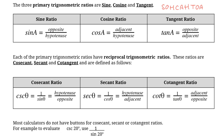There are three other trig ratios — the reciprocal trigonometric ratios. These are cosecant, secant, and cotangent. They're just the reciprocal of your primary trig ratios. Cosecant is the reciprocal of sine, so it's hypotenuse over opposite. Secant is the reciprocal of cosine, so that's hypotenuse over adjacent. And cotangent is the reciprocal of tangent, so this is adjacent over opposite.